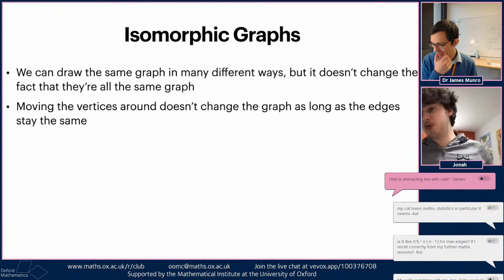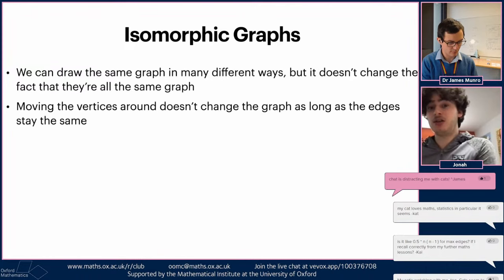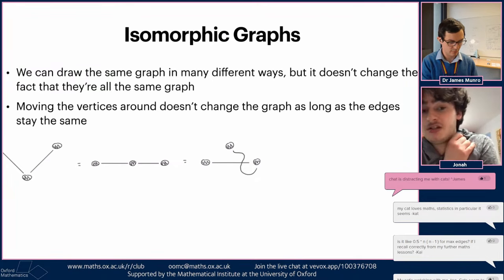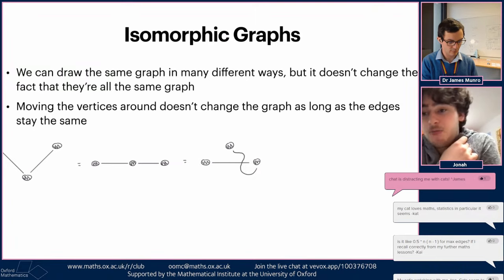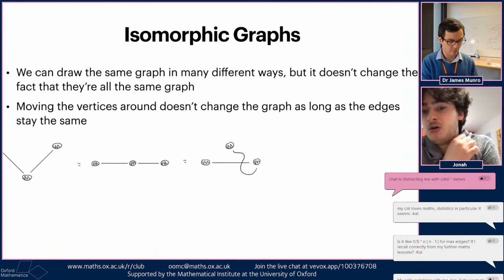As long as we can move vertices around but keep the edges connected to the same vertices, it's still the same graph. You can move vertices, bend edges, stretch them - as long as you don't break edges, you're fine. These graphs are all the same - I've just been moving the vertices around and maybe changing how the edges are drawn. We normally draw edges with straight lines for simplicity, but that's not a requirement at all.